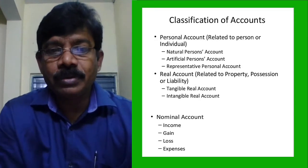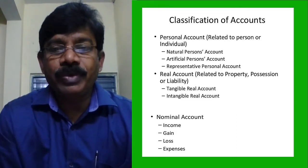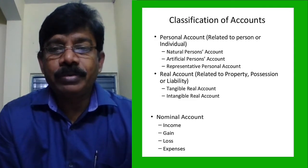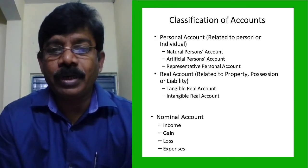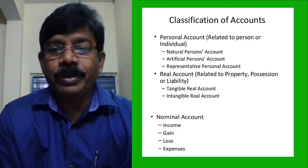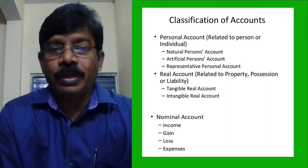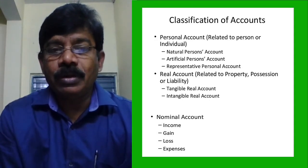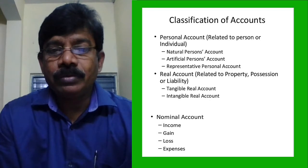Personal accounts are related to persons or individuals — natural persons, artificial persons, and representative persons. Natural persons are people like us. Artificial persons are your college, bank, or company. Representative persons include outstanding or prepaid expenses and similar items. The second type of account is the real account, related to property, position, or liability. Real accounts may be tangible — those we can see and touch. The third important type is the nominal account, where all expenses, incomes, gains, and losses of an organization are recorded.